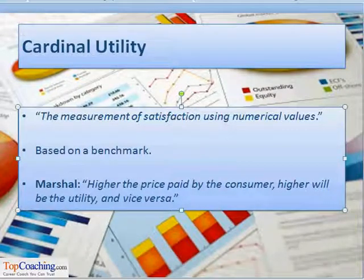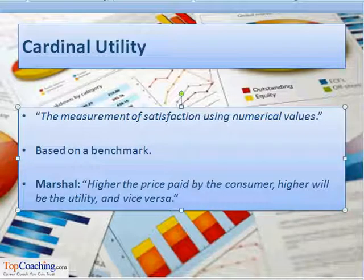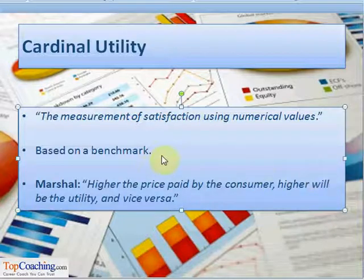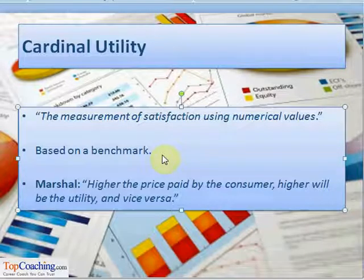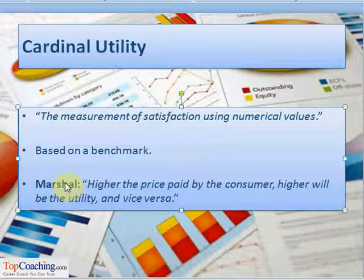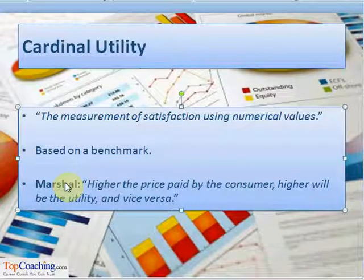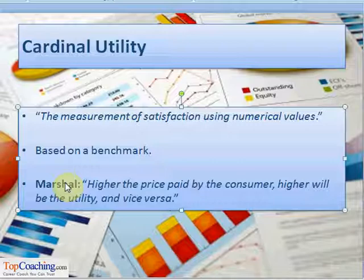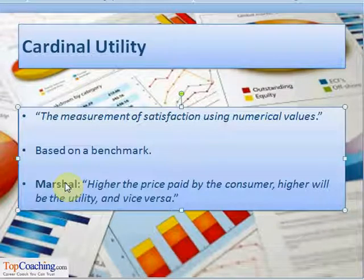Another related term is cardinal utility. Cardinal utility is the measurement of satisfaction using numerical values such as 1, 2, 3, etc., that are comparable and based on a benchmark or scale. It is assumed that utility is a quantifiable entity. Economist Marshall provided cardinal measurement of utility, according to which the higher the price paid by the consumer for a commodity, the higher will be the utility of that commodity, and vice versa.